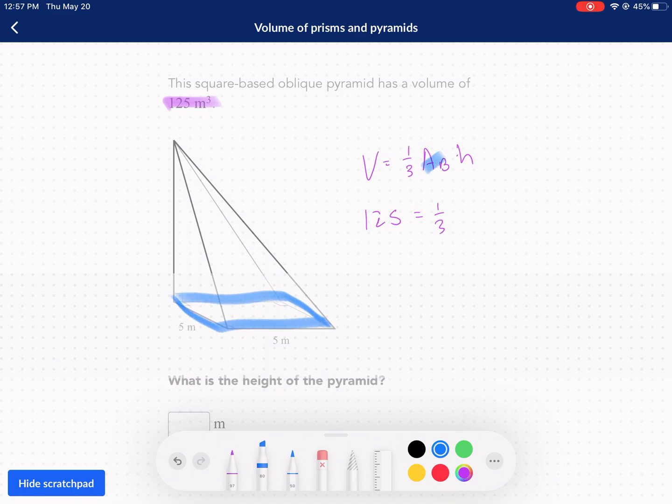So we're going to say that the area of the base is 25. But what about our h? We are missing the h, which is that distance right here. We're talking about altitude, straight up, straight down, times h. Now what we're going to do is we're going to say 125 equals one-third times 25 times h. Just a different color.